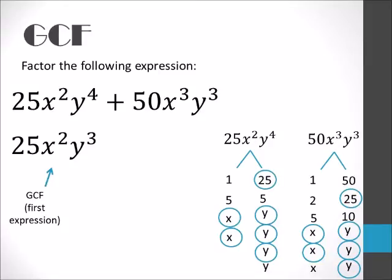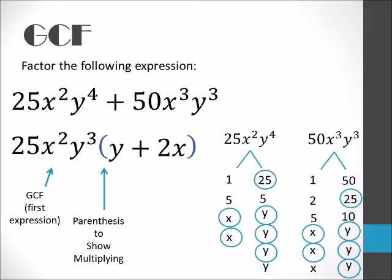In order to factor this out properly, we first need to write parentheses. This demonstrates our multiplication from our GCF to our second term. In order to find out what the second expression is, we have to divide our GCF out from our original expression. 25x squared y to the 4th divided by our GCF will give us y. And our second term, 50x cubed y to the 3rd divided by our GCF will give us 2x. So our final answer here is 25x squared y cubed times y plus 2x.